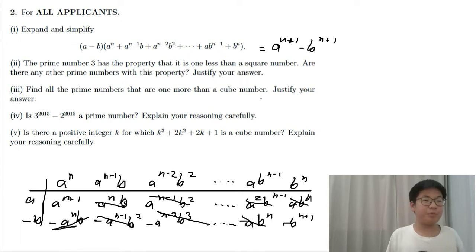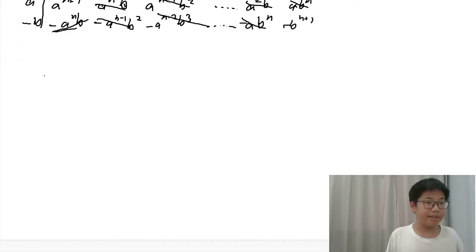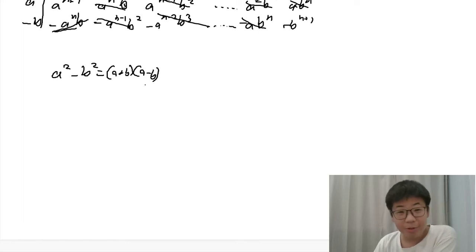The prime number 3 has the property that is 1 less than the square number. Well, here's the difference of squares formula. We need to find all the prime that wants which are 1 less than the square number. So, we substitute b for 1.